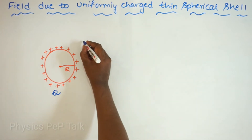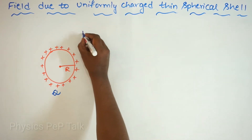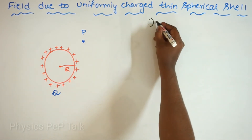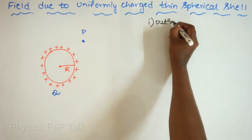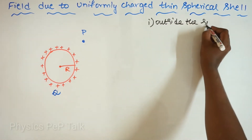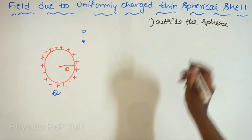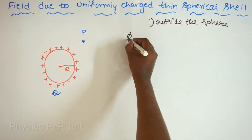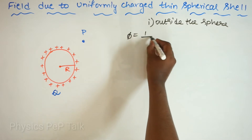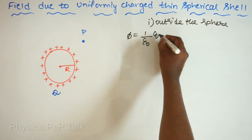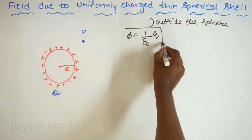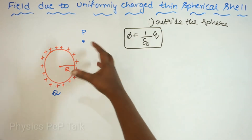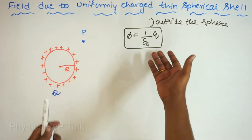First case: outside the sphere. Gauss's law states that the total flux will be 1 by epsilon naught times the total charge enclosed in the system. I will consider a Gaussian surface — an imaginary sphere — such that point P lies on it.